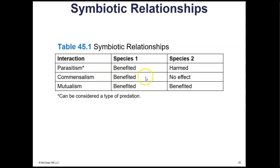In commensalism, you have one species that benefits from the relationship, but another species that doesn't appear to be affected in any way — neither benefited nor harmed. And then we have mutualism, which is where both species benefit from the relationship.